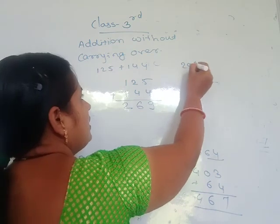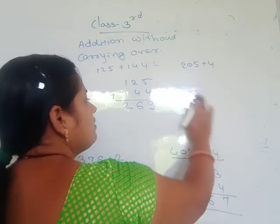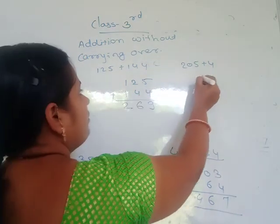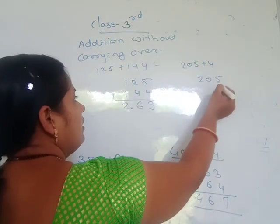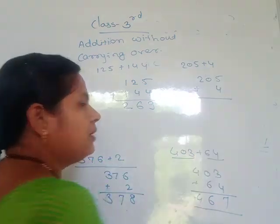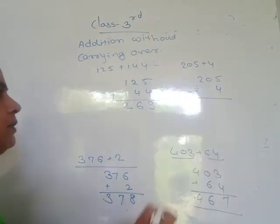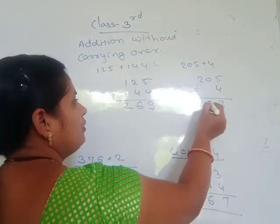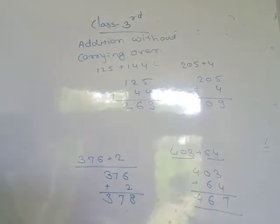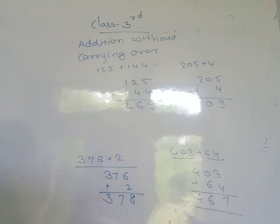Next: 205 plus 4. This is a 3-digit number. Only the units place number is given for 4, so write unit below unit. 5 plus 4 equals 9, tens place stays 0, hundreds stays 2 — giving 209. Some more examples remain and I will send homework tomorrow. Bye!